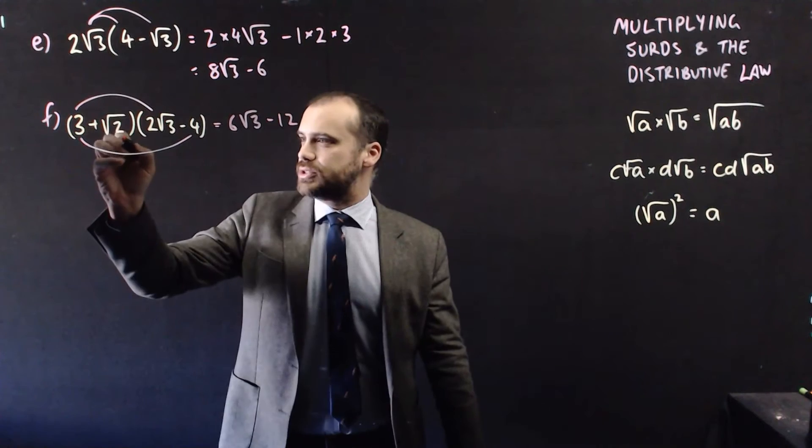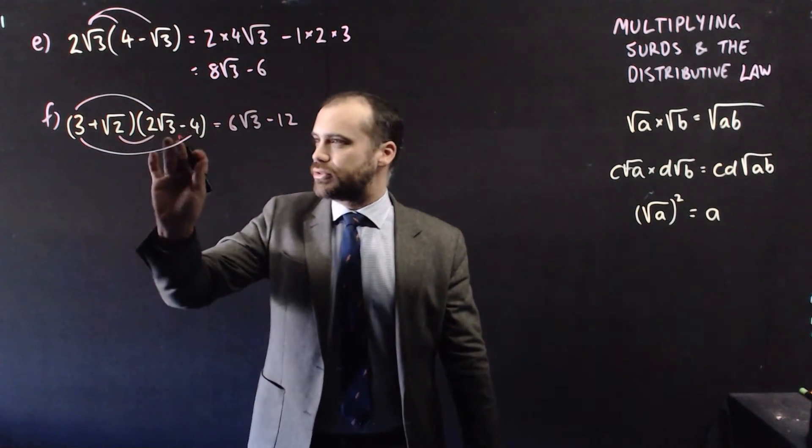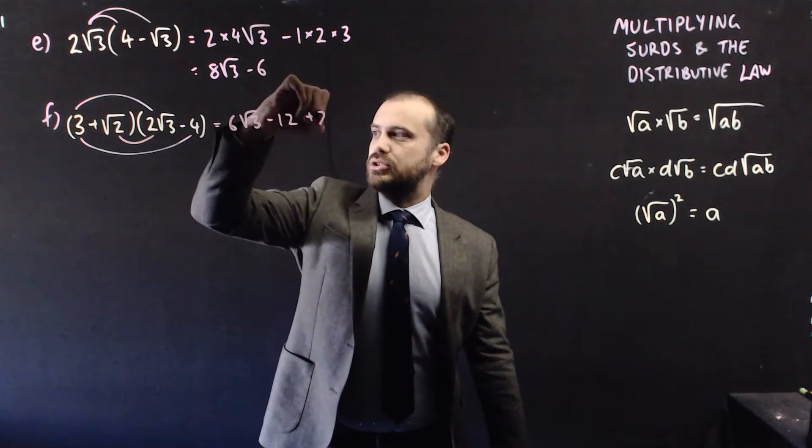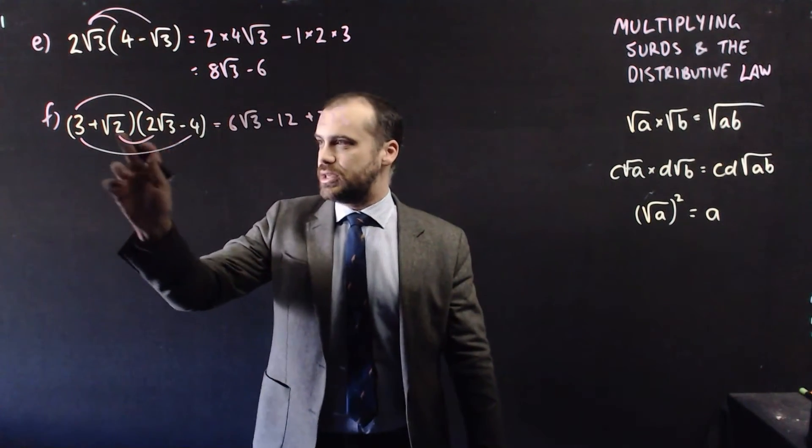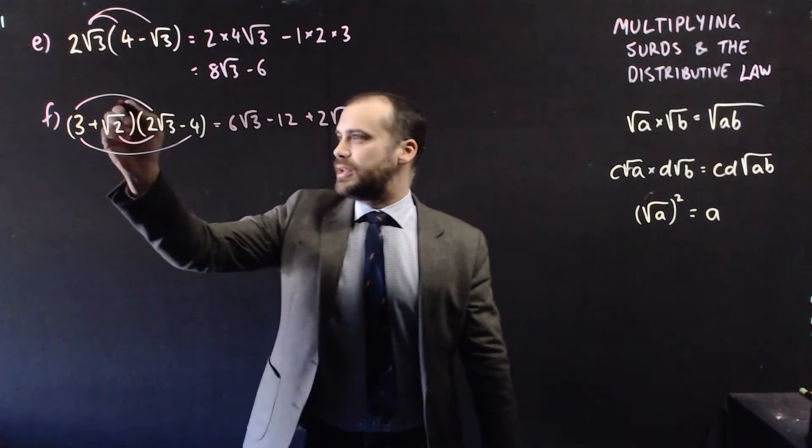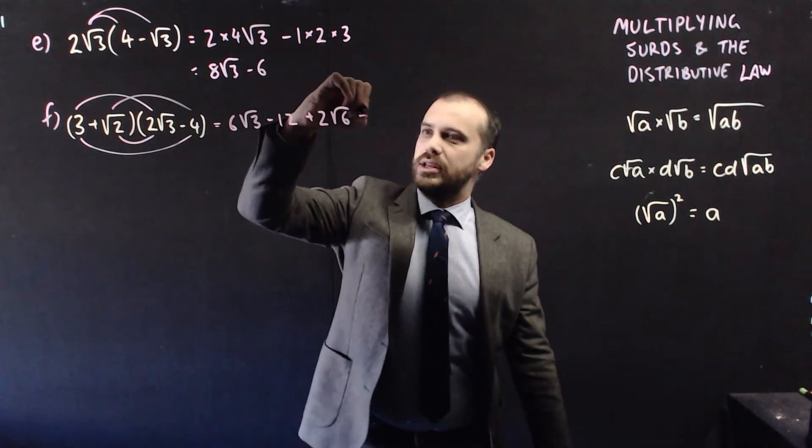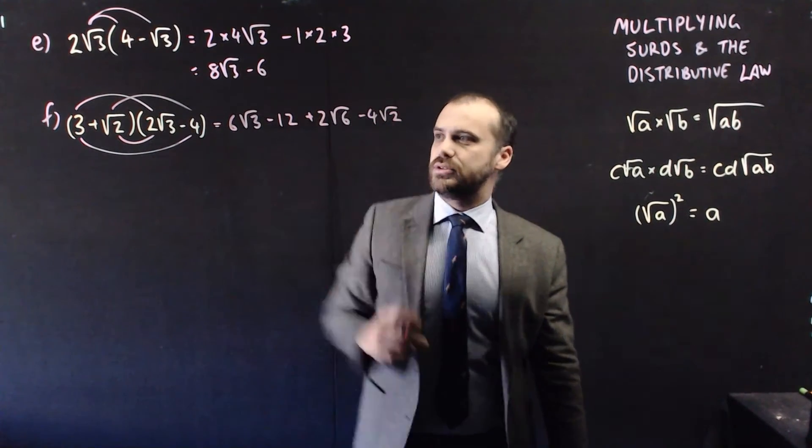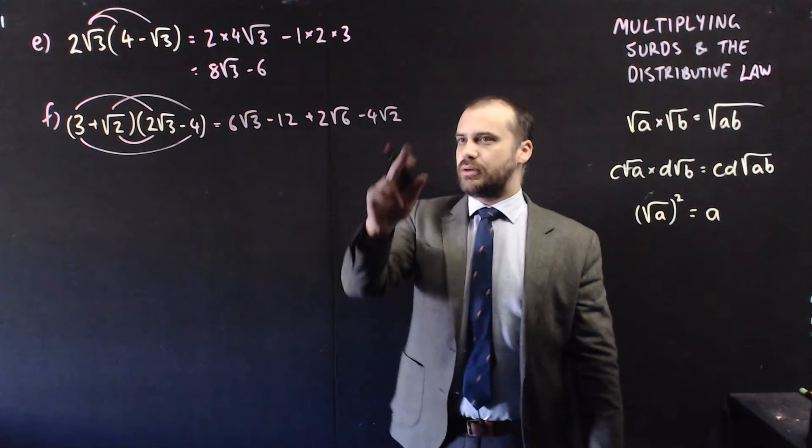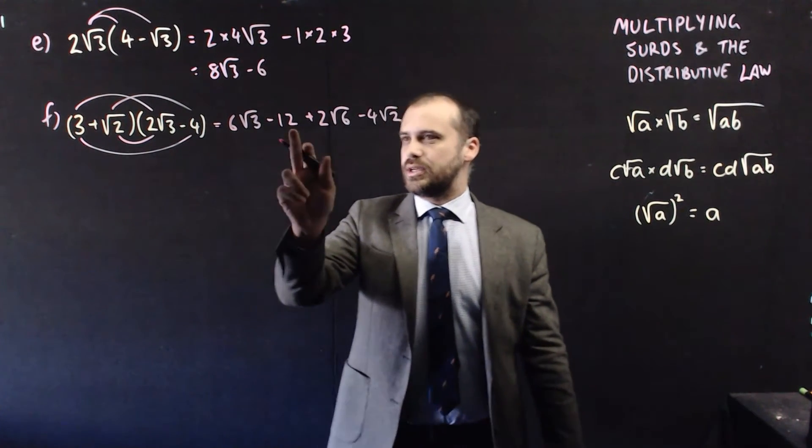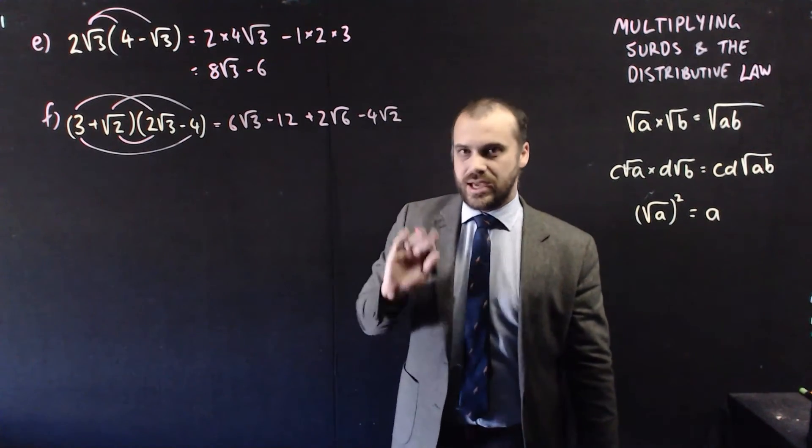Inner, let's do it that way. Root 2 times 2 root 3. That's going to be 2 root 6, because the 2 times the 3 here is going to be 6. And then last, root 2 times negative 4, negative 4 root 2. And then we check to see if we can simplify it. A root 2, a root 6, a root 3, and a whole number. No, we can't simplify it. That's the end of that.